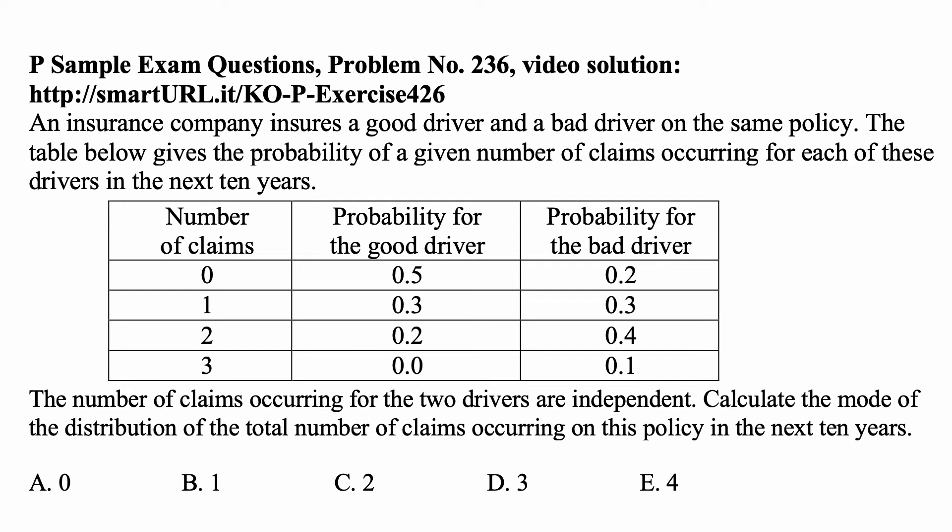But if you add the number of claims of the two drivers, then the total number will be the first one plus the second one, which could be 0 plus 0, or 0 plus 1, 1 plus 0, 0 plus 2, 1 plus 1, 2 plus 0, and so on. And the smallest number, of course, is 0, but the largest number would be 3 plus 3, so 6. So these values of the total number of claims for both of them go from 0 to 6.